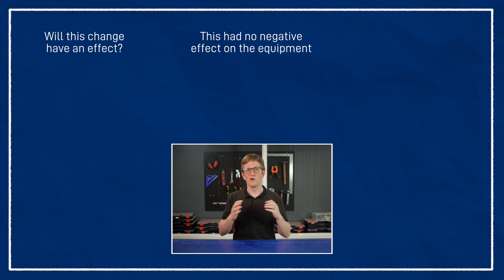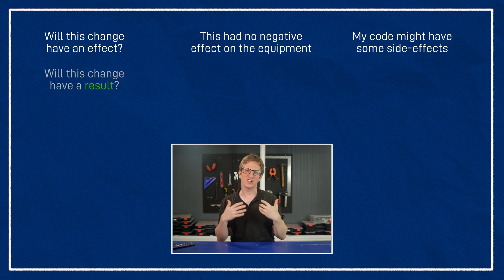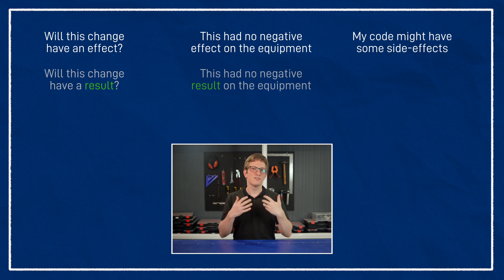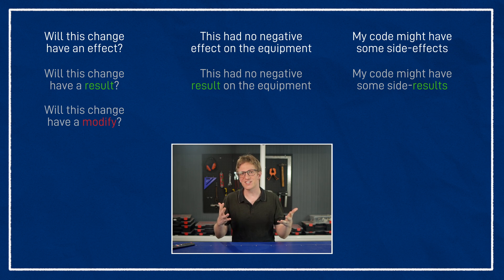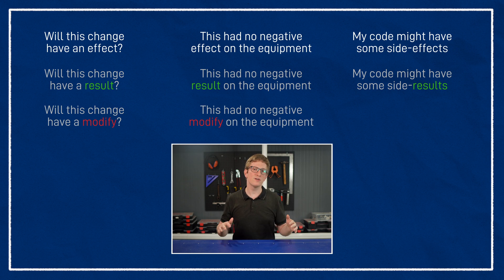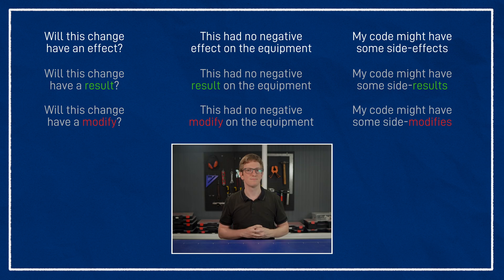Here are some examples of the noun 'effect,' or 'result.' Will this change have an effect? This had no negative effect on the equipment. My code might have some side effects. First, we'll try putting in the word 'result': Will this change have a result? This had no negative result on the equipment. My code might have some side results. And it's not a perfect substitute, but look what happens when we try to use 'modify' instead: Will this change have a modify? This had no negative modify on the equipment.